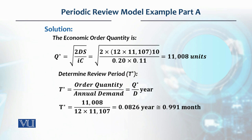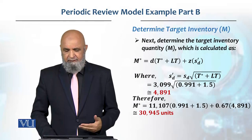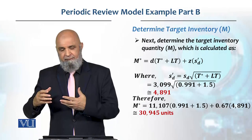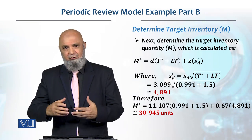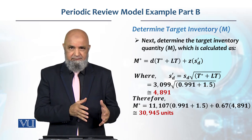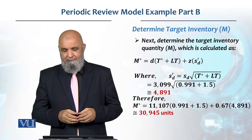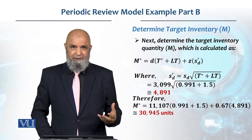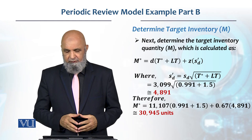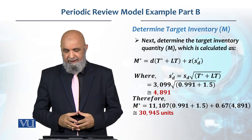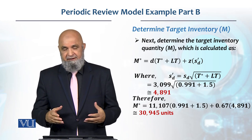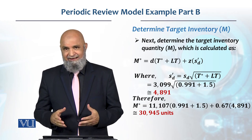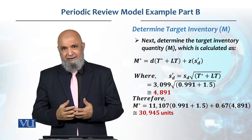To calculate target inventory M, it equals the average demand during review period and lead time. We sum the review period and lead time, multiply by monthly demand, then add safety stock: z multiplied by the standard deviation of monthly demand. The standard deviation of demand during lead time equals the standard deviation of monthly demand multiplied by the square root of (review period + lead time). This comes to 4,891 units — that is our target inventory standard deviation.